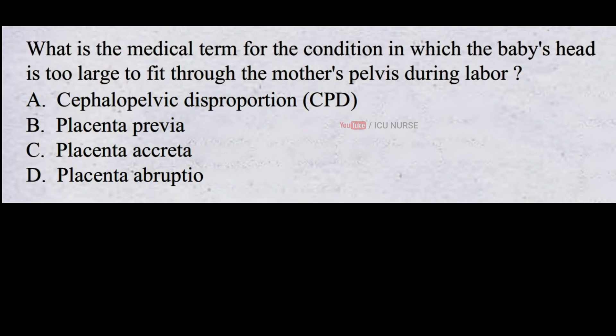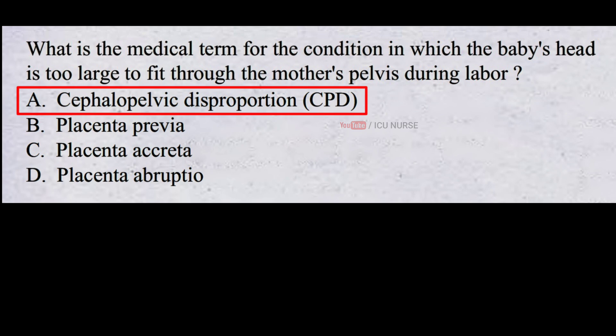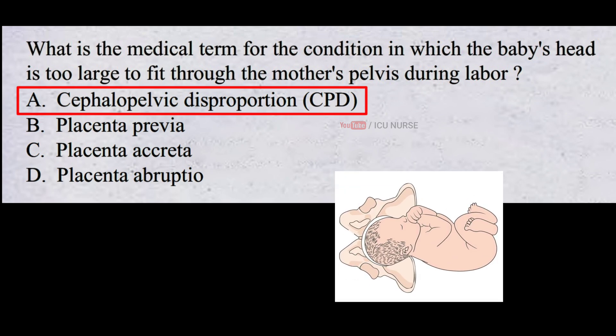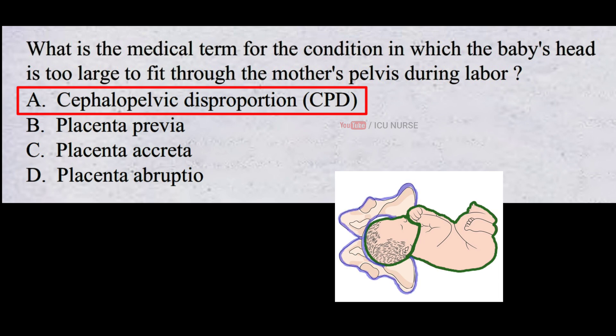What is the medical term for the condition in which the baby's head is too large to fit through the mother's pelvis during labor? A. Cephalopelvic disproportion. B. Placenta previa. C. Placenta accreta. D. Placenta abruptio. And the correct answer is A. Cephalopelvic disproportion is a medical condition that occurs when a baby's head or body is too large to fit through the mother's pelvis during labor and delivery. This can make vaginal delivery difficult or impossible and may require a cesarean section to safely deliver the baby.